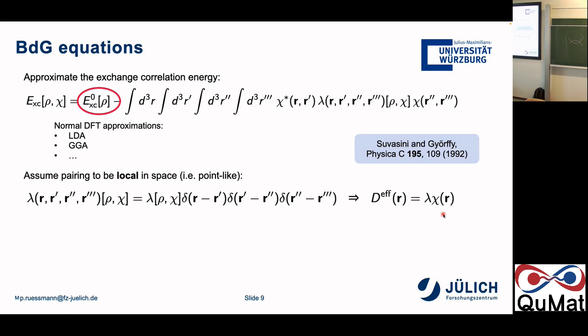Question from audience: Is it obvious that you have to keep track of both the density and anomalous density? From a field theory perspective, using a Hubbard-Stratonovich transformation and decoupling the interaction, one would perhaps only keep the second part related to the anomalous density. Response: You could absorb the first part into the second. We introduced this separation because the superconducting energy scale is much smaller than the typical electronic energy scale — it's a small perturbation. We want to start from the normal electronic structure and then add the superconducting parts on top.